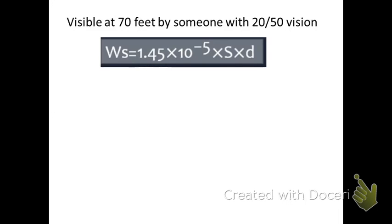Stroke width is 1.45 times 10 to the negative 5, times the denominator of the Snellen acuity. This is the Snellen acuity, 20/50 vision, so the denominator of the Snellen acuity is 50 in this case.